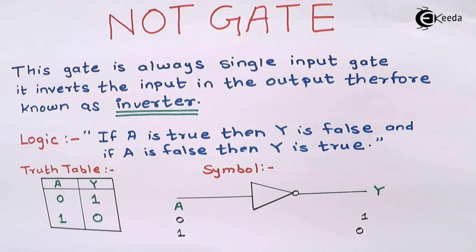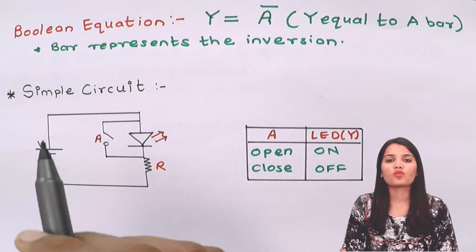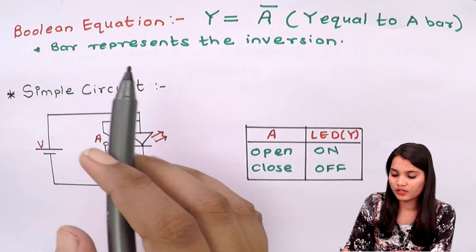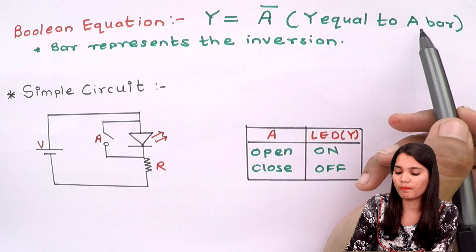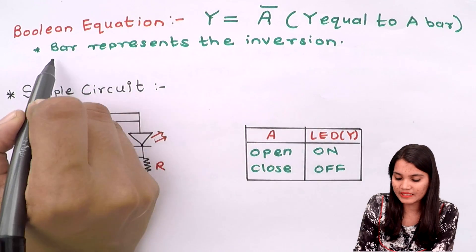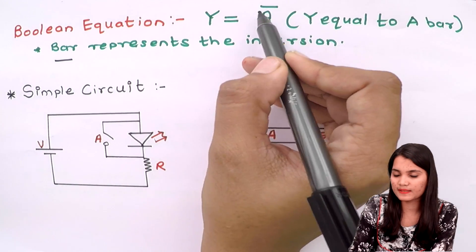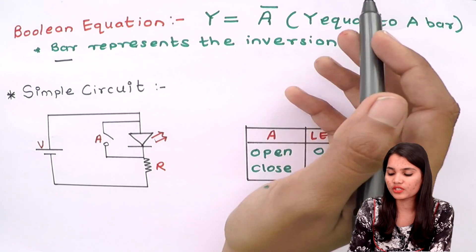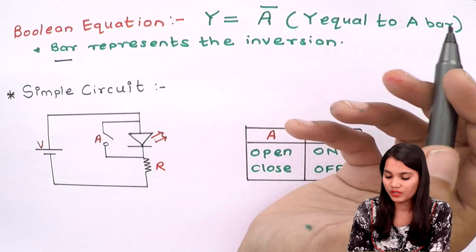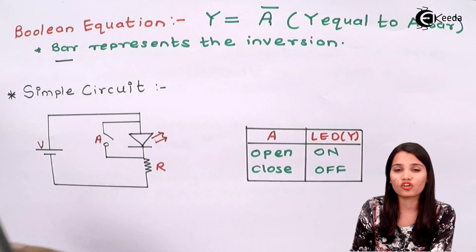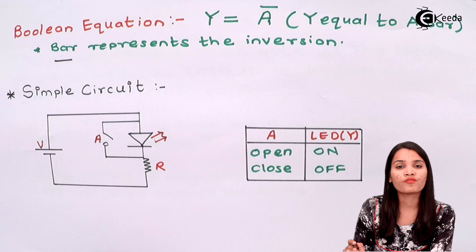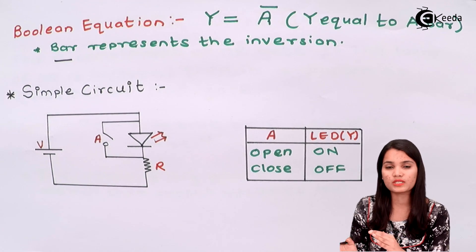Now let's see the Boolean equation for the NOT gate and how it is represented in the electrical circuit, so we have a clear idea of its applications. The Boolean equation is: Y equals A-bar. Here the bar represents inversion — it is written as a bar over A. So we will get the inverted value of A at the output. It is very important to understand its application using the simple electronic circuit.